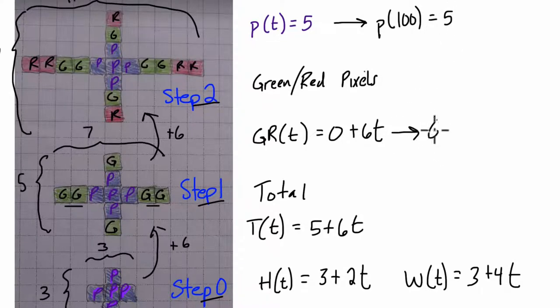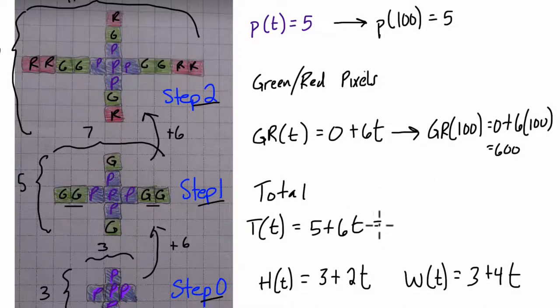Well, for green and red, right, GR of 100, we get 0 plus 6T, and T, the step number here, or time, is 100. So that would be 0 plus 600. Remember, we multiply first, so it's 6 times 100, that's 600. So it's going to be 600 green and red.